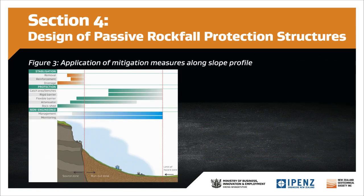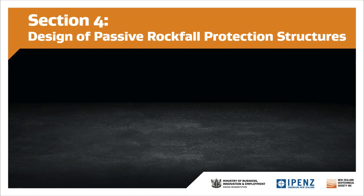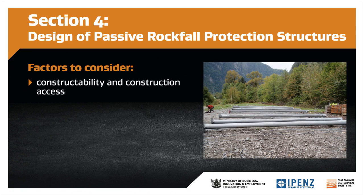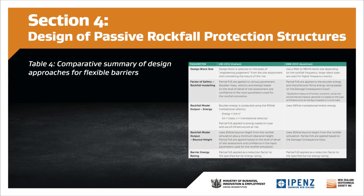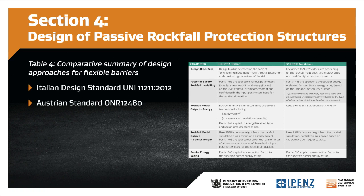The next step is to consider the structure type, location, and length. These should be considered in parallel, as the choice of location may affect the structure type and length. An options study may be useful to compare multiple alternatives. Other important factors to consider include constructability and construction access, maintenance, health and safety, and land ownership. The design of rockfall protection structures is a relatively new and evolving field. Guidance and standards on the design of rockfall fences and embankments has recently been released in both Italy and Austria. A summary of these approaches is included in Table 4.